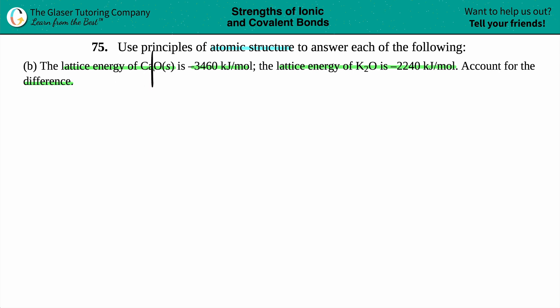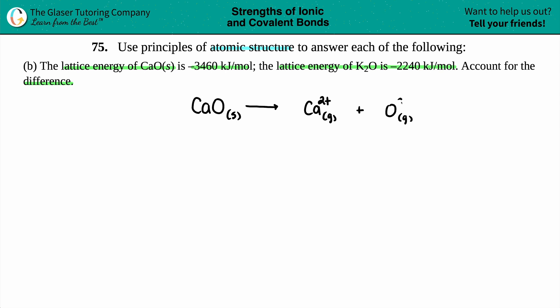In terms of lattice energy, it's usually written as a balanced equation where calcium oxide solid is the ionic compound and it breaks up into its gaseous ions: Ca²⁺ in the gaseous state plus O²⁻ in the gaseous state. The calcium is a +2 and the oxygen is a -2 — you can find these from periodic trends. Calcium is in group 2, so it's +2, and oxygen is in group 6 (16), which always carries a -2 charge.